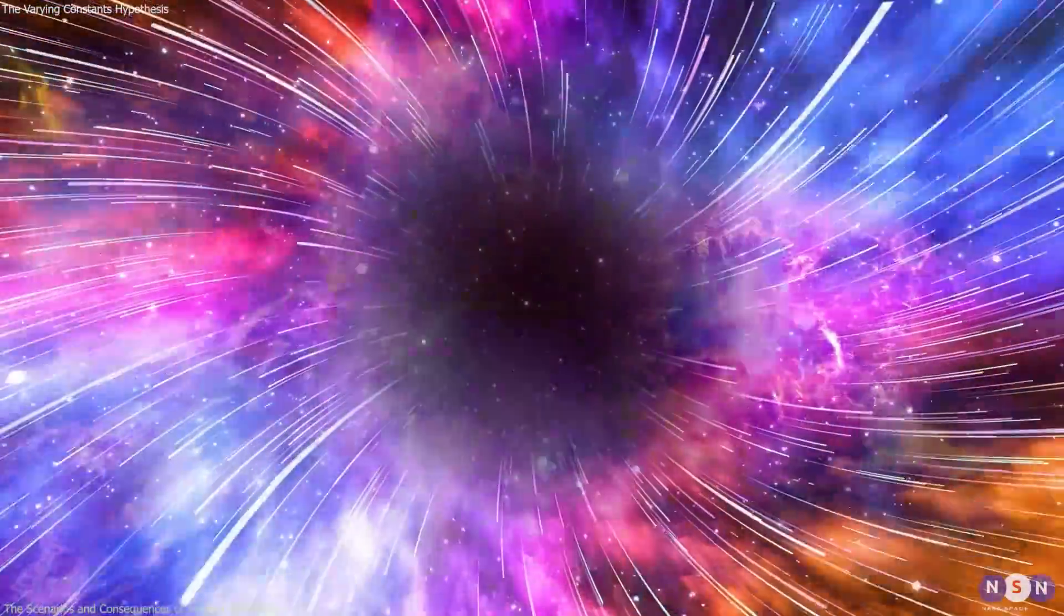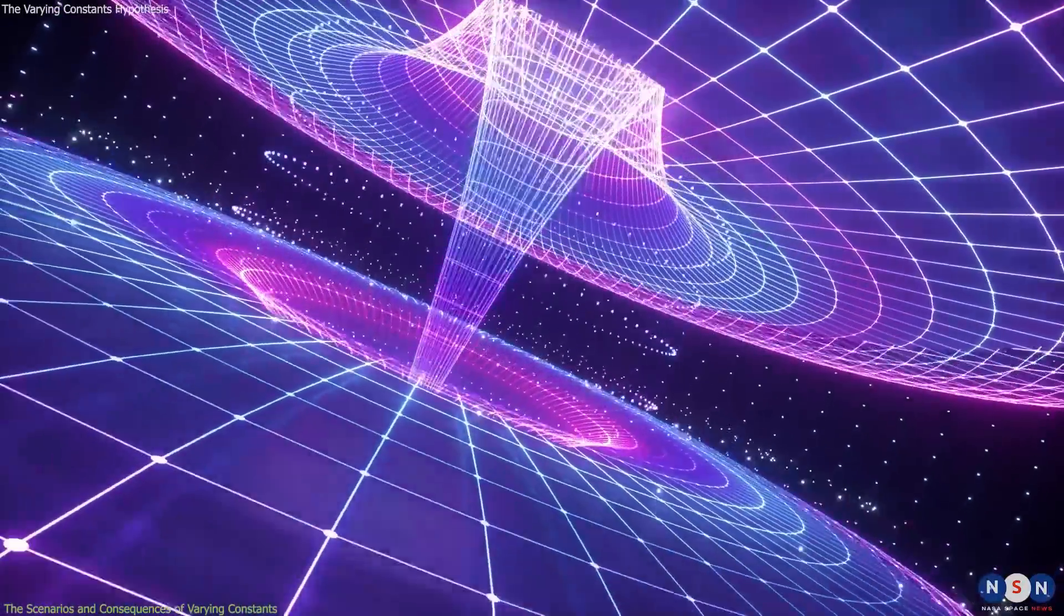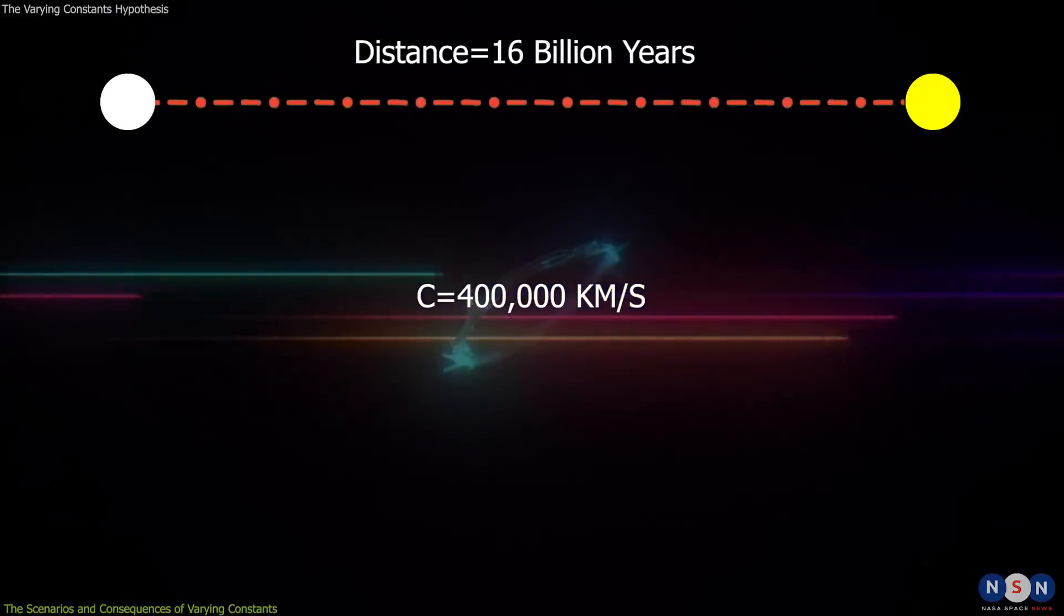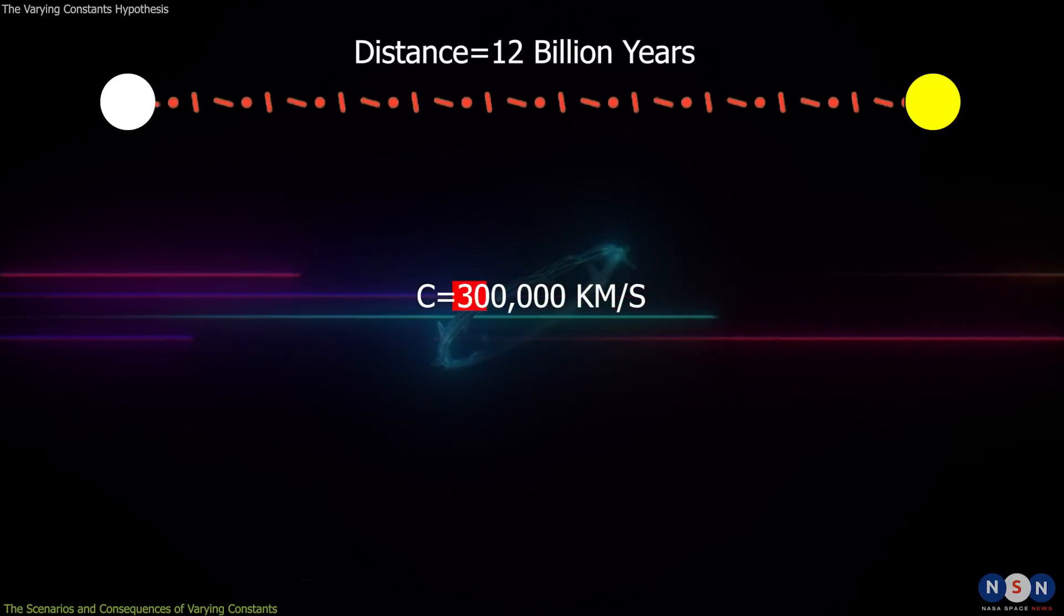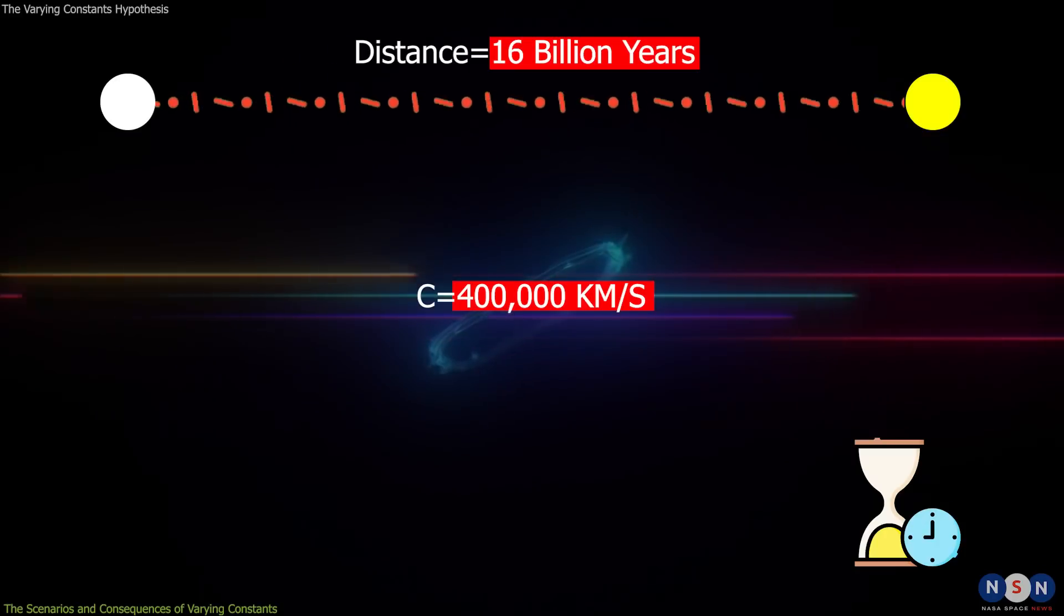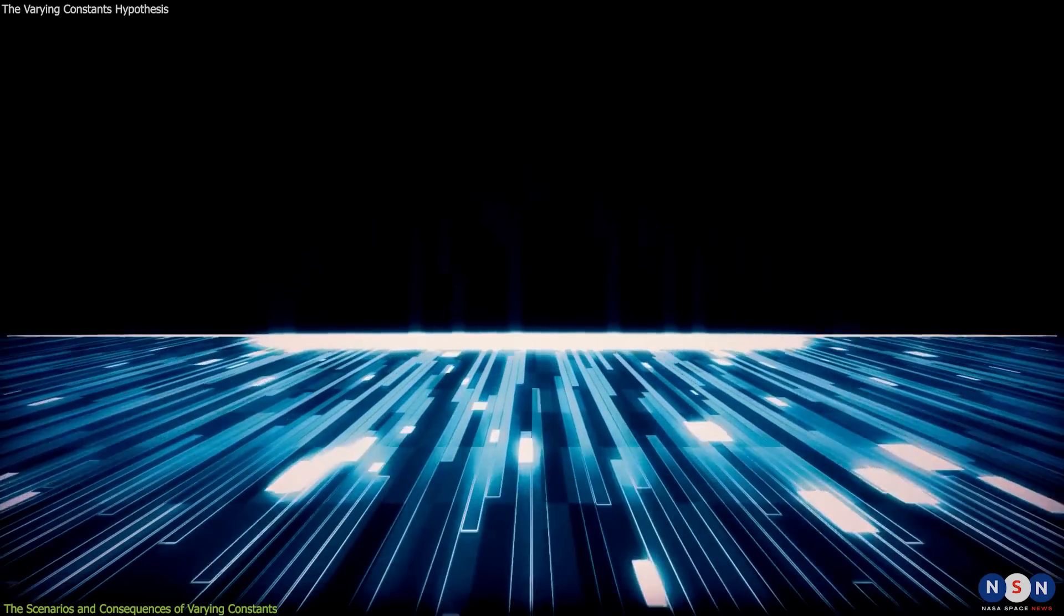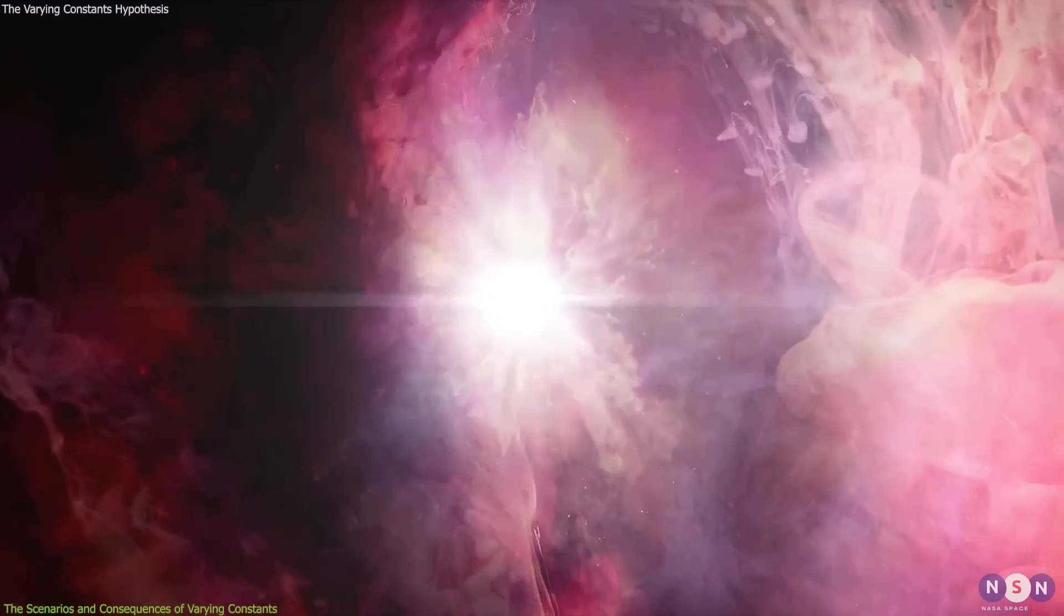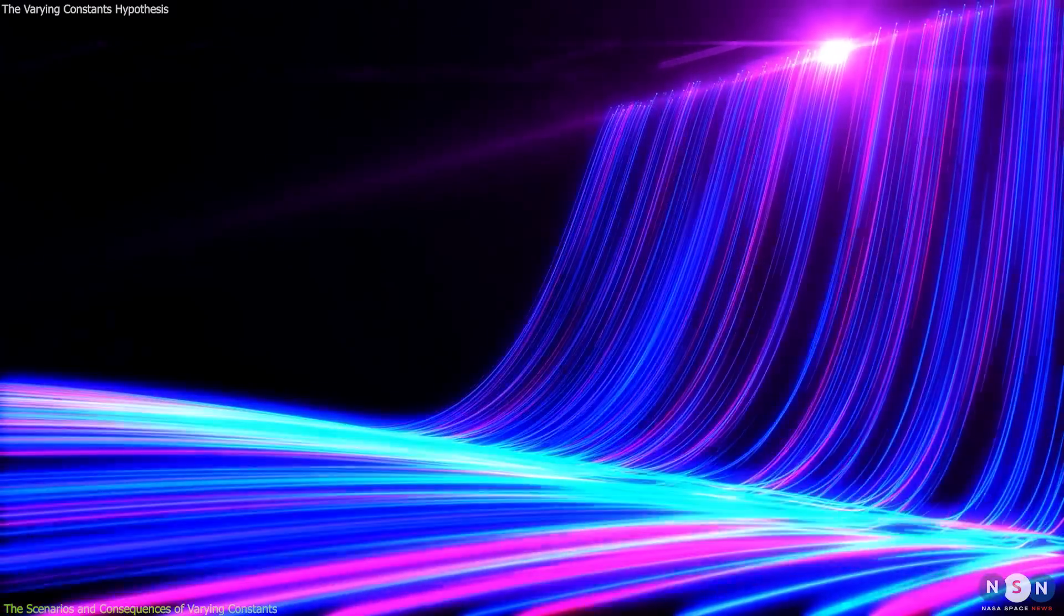For example, let's consider the speed of light. If the speed of light varies over time or space, then many things we take for granted would change. For example, the distance between two points would no longer be constant, but would depend on when and how we measured it. The same would apply to the duration of events and the synchronization of clocks. The speed of light also determines the causal structure of space-time, that is, which events can influence or be influenced by other events. If the speed of light varies, then causality could be violated or altered in some regions of space-time.